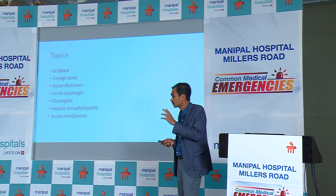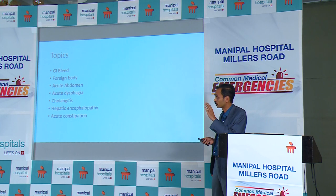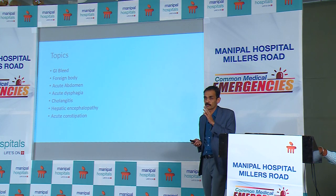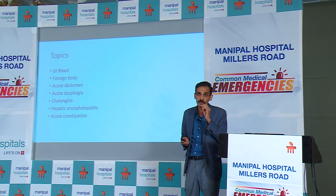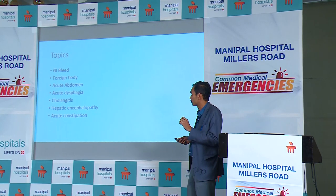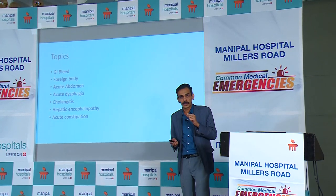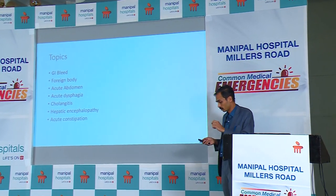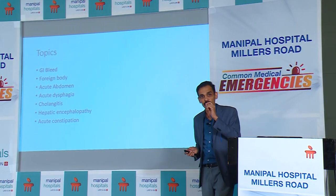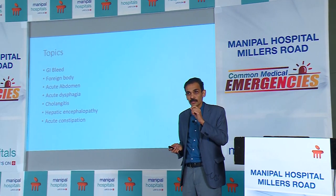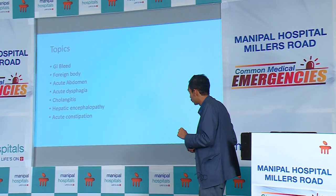We will discuss GI bleed, foreign body in the gastrointestinal tract, acute abdomen — which is more of a surgical purview, but I will tell you what to look for in an acute presentation of abdominal pain — acute dysphagia, cholangitis, hepatic encephalopathy, and acute constipation, which is the most bothersome symptom for any human being but gets relieved very easily by simple clinical management.